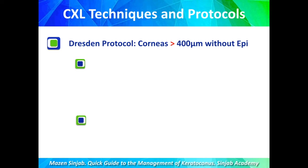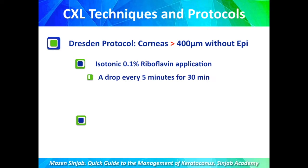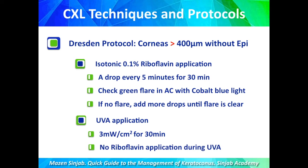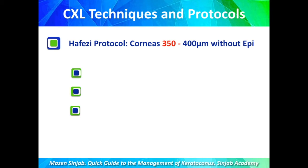The Dresden protocol is applied on corneas with good thickness — more than 400 microns without the epithelium. We use an isotonic riboflavin solution, applying one drop every five minutes for 30 minutes, then check for green flare in the anterior chamber using cobalt blue light. If no flare is seen, more drops are added. UVA is then applied at 3 mW/cm² for 30 minutes, with no need to apply riboflavin during UVA.